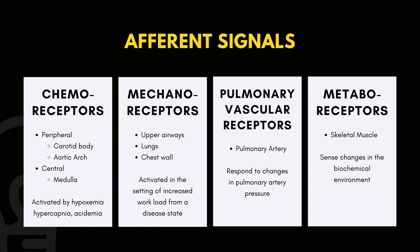Next are the mechanoreceptors in the upper airways, lungs — including stretch receptors, irritant receptors, and J receptors — and chest wall including muscle spindles as stretch receptors and tendon organs that monitor force generation. These are activated in the setting of an increased workload from a diseased state producing an increase in airway resistance that may be associated with symptoms of chest tightness or decreased lung or chest wall compliance, such as in pulmonary fibrosis.